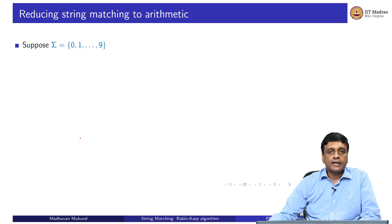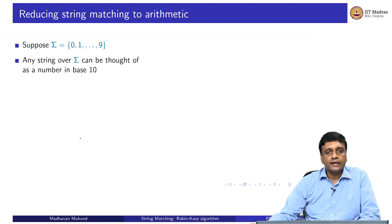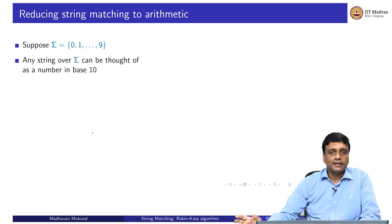It is simplest to describe when we take the alphabet to be the letters 0 to 9. These are the digits that we use to write numbers. And clearly, you can take any string over this sigma, this alphabet, and interpret it as a number in base 10. Of course, there will be a complication if there are zeros at the beginning of the string, the number will be smaller than the length of the string in some sense. But we can always take care of that by making sure that we remember the zeros.